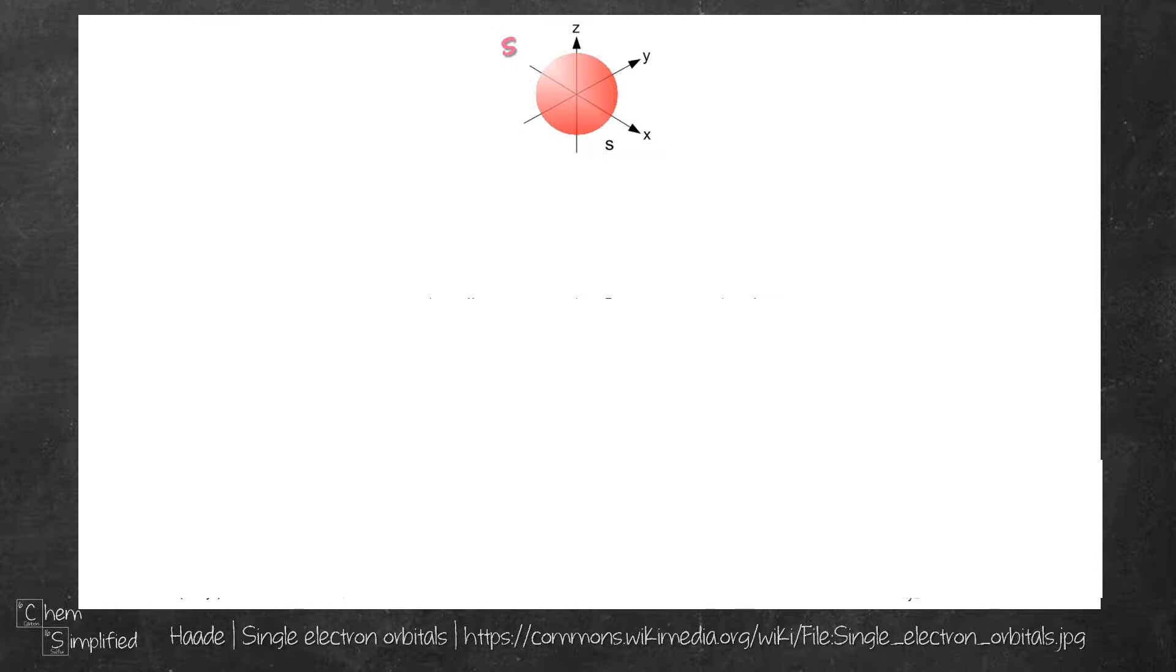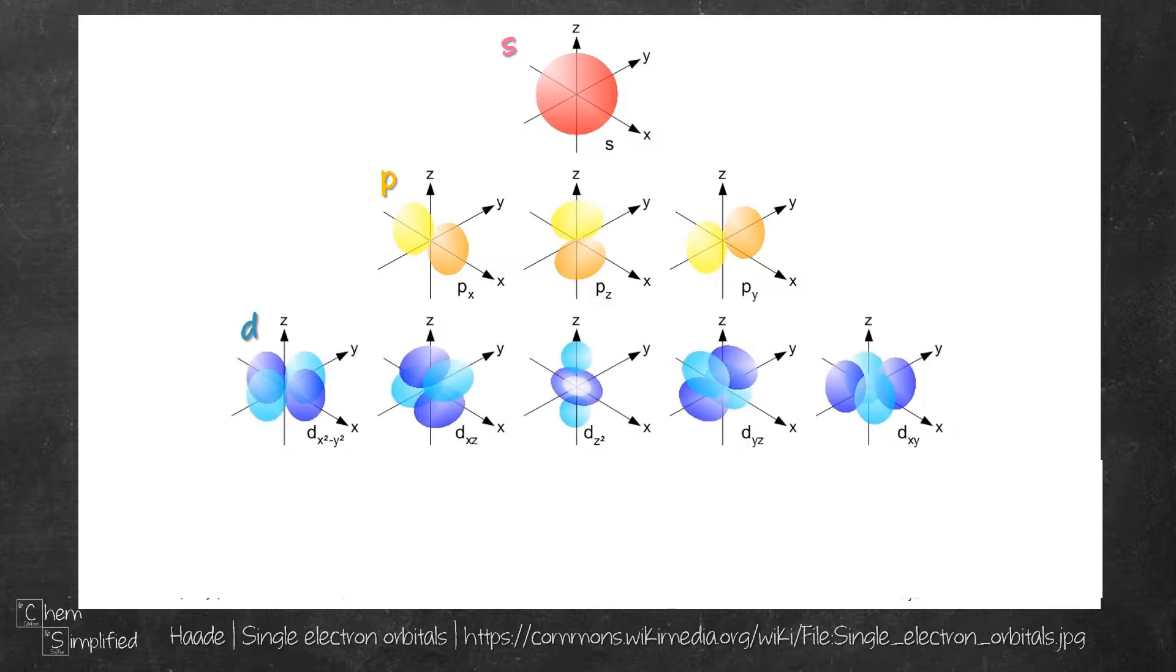The second type is P. There are three of them looking like dumbbells. The third type is D. There are five of them.